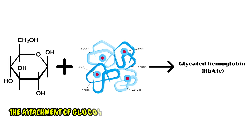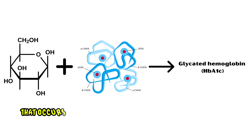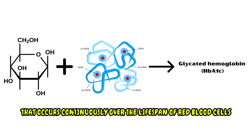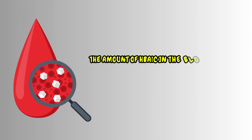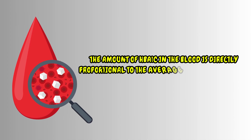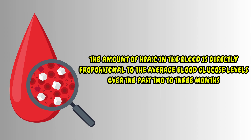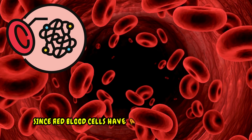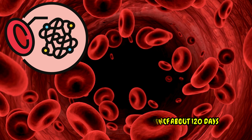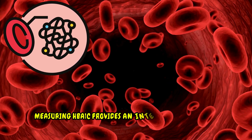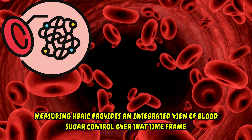The attachment of glucose to hemoglobin is a non-enzymatic process that occurs continuously over the lifespan of red blood cells. The amount of HbA1c in the blood is directly proportional to the average blood glucose levels over the past 2 to 3 months. Since red blood cells have a lifespan of about 120 days, measuring HbA1c provides an integrated view of blood sugar control over that time frame.